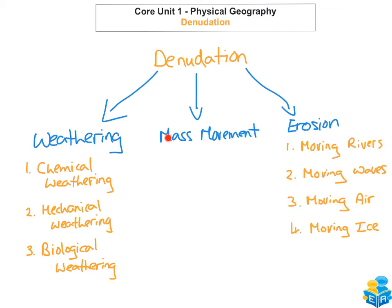The last one is mass movement. Mass movement is the movement of loose material — which we sometimes call regolith — down slope, and the reason why it moves down slope is because it's under the influence of gravity. There are two main mass movement categories you should know: the slowest form of mass movement is soil creep, and then there are very rapid and fast forms of mass movement like landslides, mudslides, or avalanches.